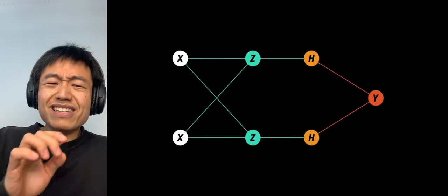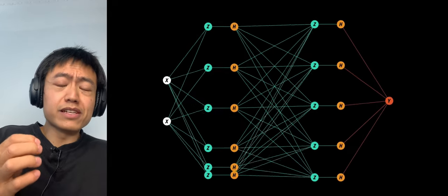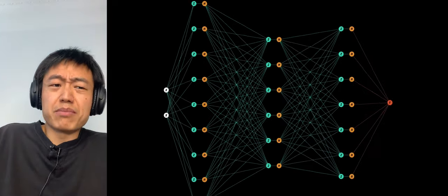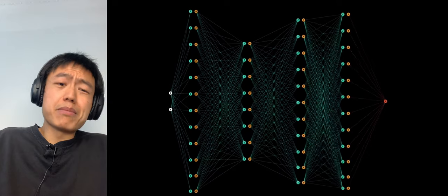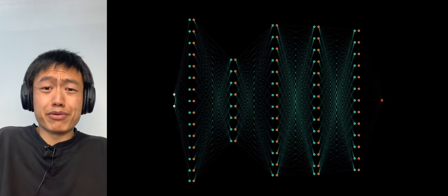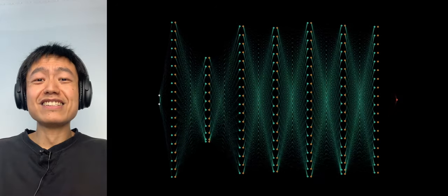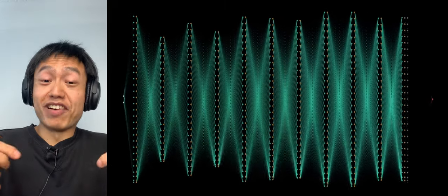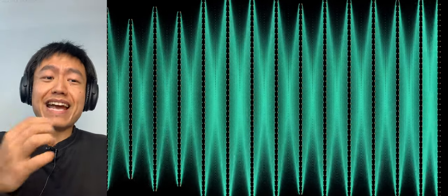No matter whether the neural network has 9 parameters, or 9,000 parameters, 9 million parameters, or 9 billion parameters. After descending gradients over and over again, the machine can accurately classify the data relatively.